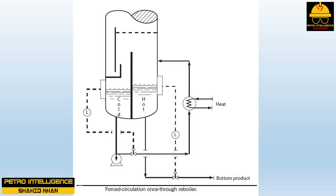A once-through forced circulation reboiler uses a pump to force circulation rather than relying on natural or thermosyphon circulation. This extra pump seems wasteful, but the great advantage of forced circulation is that careful calculation of the pressure drops through the reboiler and associated piping is not critical. However, the operator now has two tower bottom levels to control.